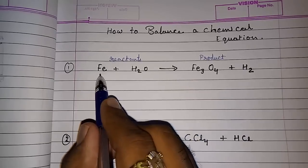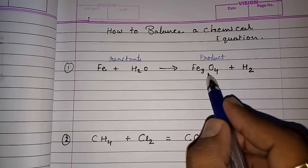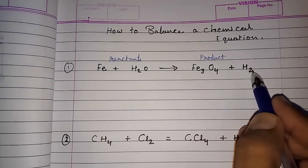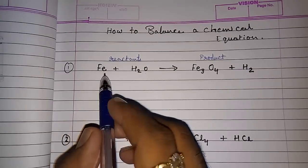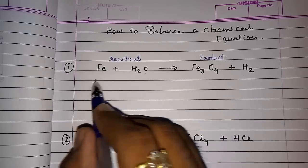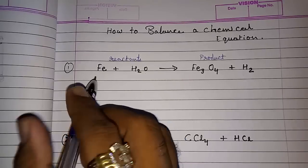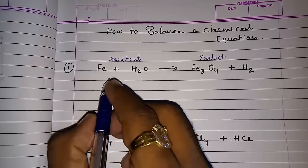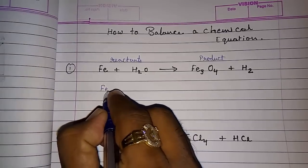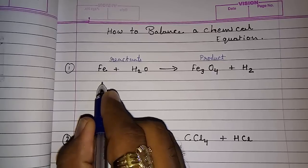Or you can say this is LHS and this is RHS. When we want to make this equation balance, first we have to look at the element and their atoms. First we have to write down the name of the element on both sides.